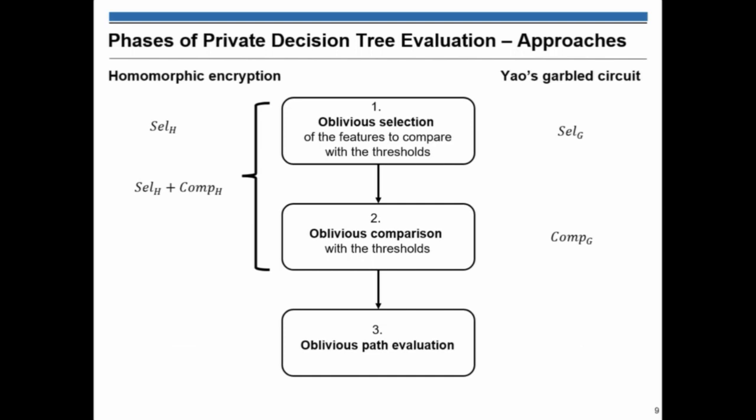That means that we don't have the selection by garbled circuit and then the compare by homomorphic encryption, because it's not really a reasonable choice because you have basically selection homomorphic in this combination as a free component.